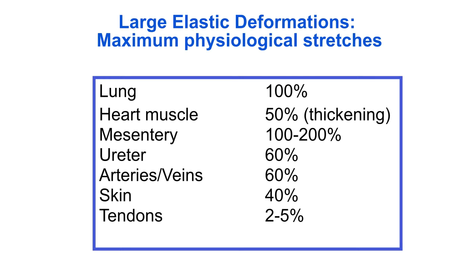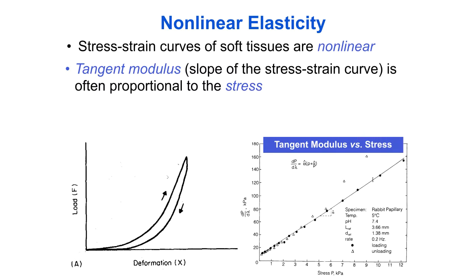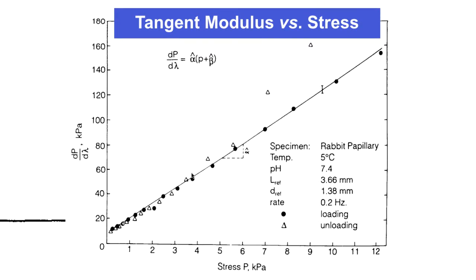Collagenous connective tissues such as tendons and ligaments are stiffer but still strain by up to 2% to 10% under physiological loads. While it can be reasonable to approximate soft tissues as elastic, it is almost never a good approximation to treat them as linearly elastic. Not only do they undergo large deformations, but the stress-strain relation is typically very non-linear. For many soft tissues, the tangent modulus, or slope of the stress-strain curve, increases in proportion to the stress, as seen in this example of resting rabbit cardiac muscle.